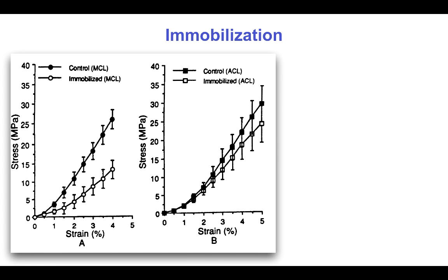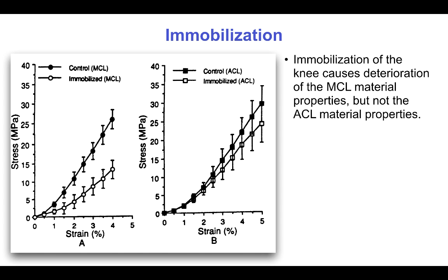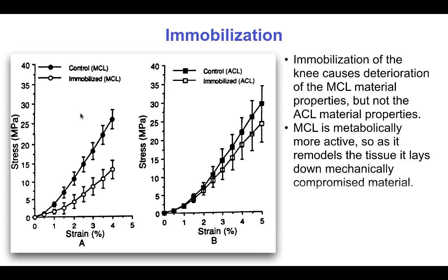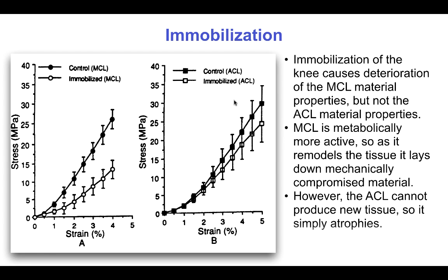Immobilization due to injury or bed rest also affects mechanical properties of connective tissues. Immobilization of the medial collateral ligament, much more so than of the anterior cruciate ligament, causes a decrease in material stiffness. The MCL is more metabolically active and turns over collagen more rapidly; new collagen that isn't being loaded has compromised mechanical strength, possibly due to decreased intermolecular cross-linking. The ACL, by contrast, doesn't turn over its collagen as quickly — it tends to atrophy or reduce in size when immobilized, an effect not captured by the stress-strain relation.